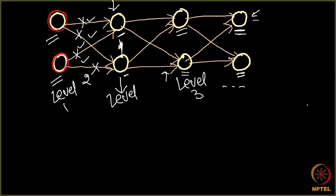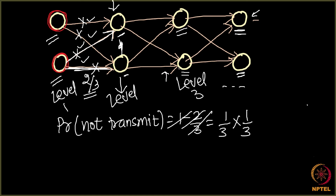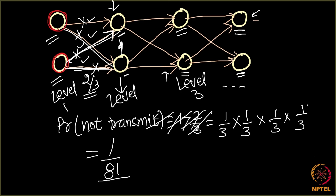The probability of infection transmitting across each edge is 2/3, so the probability that it does not transmit through any single edge is 1 − 2/3 = 1/3. Multiplying across all four edges independently, the probability that none of the four links work is (1/3)^4 = 1/81. This 1/81 is the probability that the infection does not get transmitted from one level to the next.